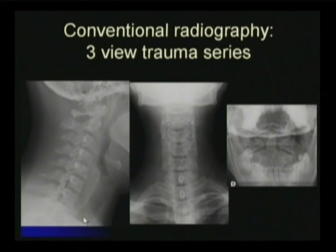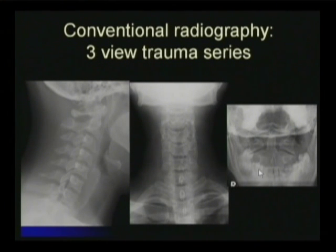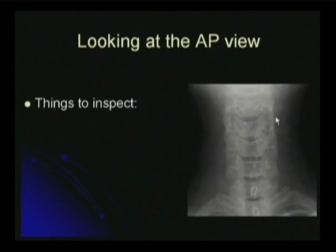Here's our cervical spine 3-view series: lateral, AP, and the open mouth view to look at the C1-2 articulations.